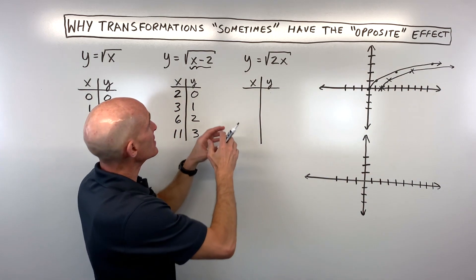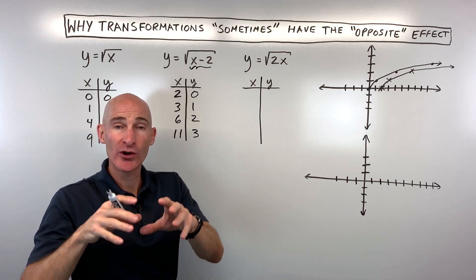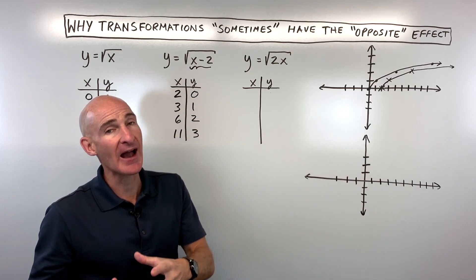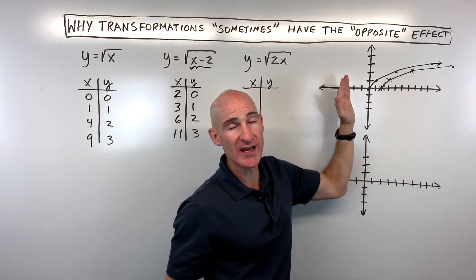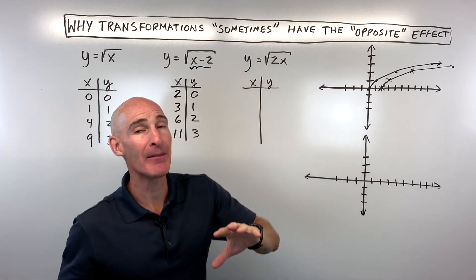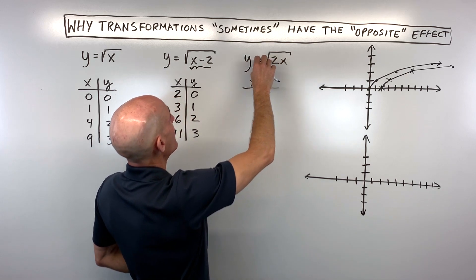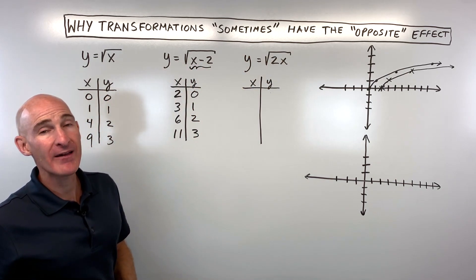The way I like to think about it is: when it's grouped with the x—whether inside parentheses, underneath the square root, or in absolute value bars—I know it's going to affect the x-axis direction, this horizontal direction, but it's going to have the opposite effect. If it's not grouped with the x, like adding 1 or having a 2 out front, that's going to affect the y values.